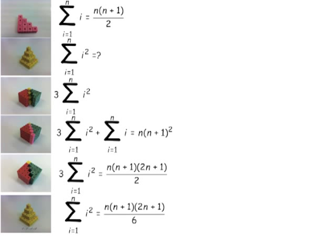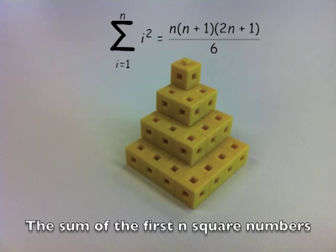So my final step then, divide both sides by three just to give me one of the pyramids, and then I've got n times n plus one times 2n plus one over six, which is the sum of the first n square numbers.